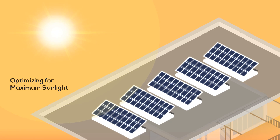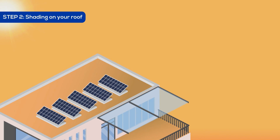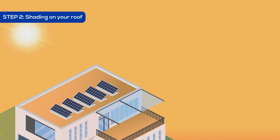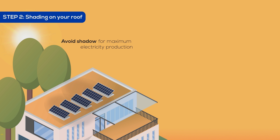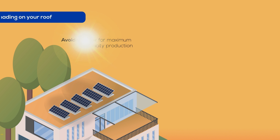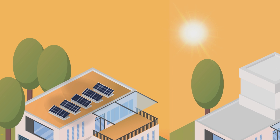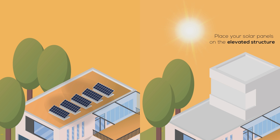Optimizing for maximum sunlight. It is important that your roof gets enough sun through the day to maximize electricity production. Tall trees or buildings nearby can block the sun, cast shade on your roof, and reduce the amount of electricity your panels produce. So it is recommended that the solar panels be installed on an elevated structure.